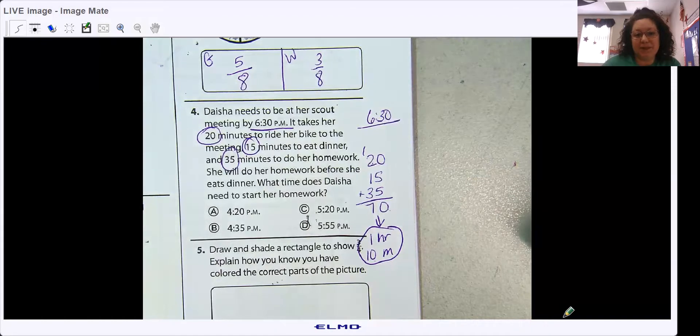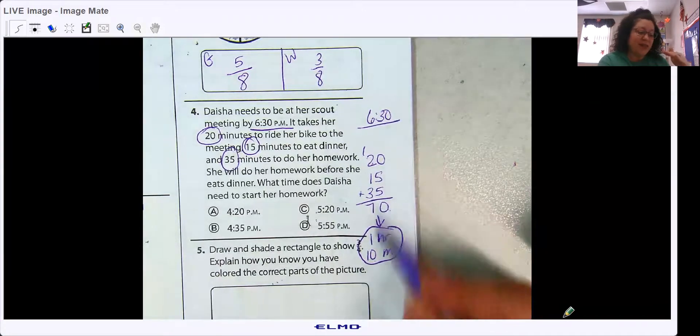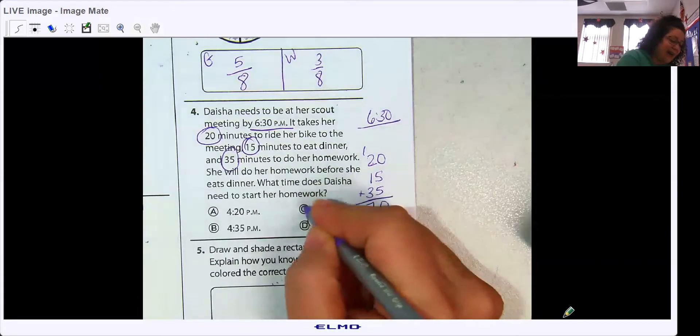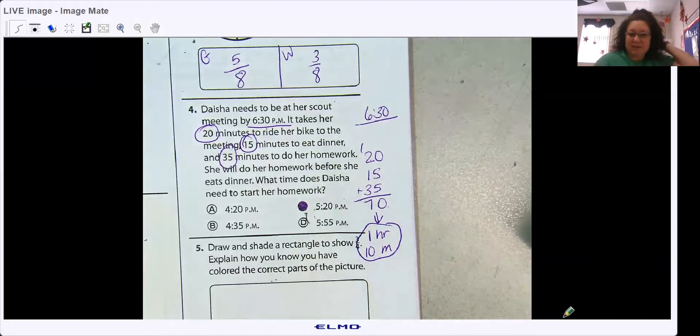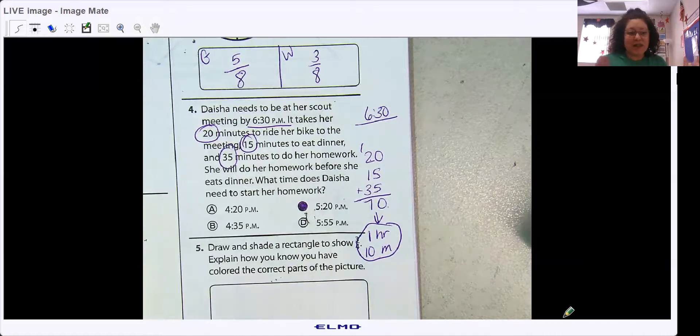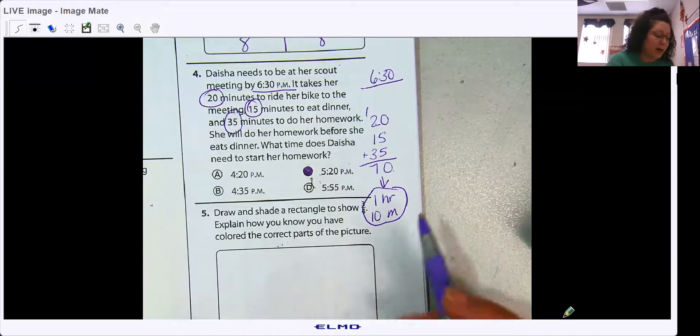What do you get? 6:30. 1 hour back is 5:30. And then 30 minutes less would make it 5:20. Hopefully, that was, again, this is all review stuff. We've done all of these skills. So, we just want to refresh on how to solve the problems.